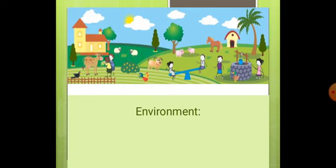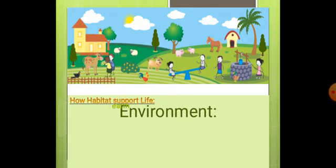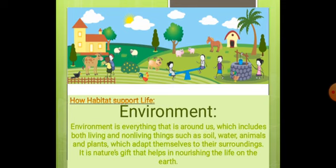First of all, Environment. Environment is everything that is around us, which includes both living and non-living things, such as soil, water, animals and plants, which adopt themselves to their surroundings. It is nature's gift that helps in nourishing the life on the earth.